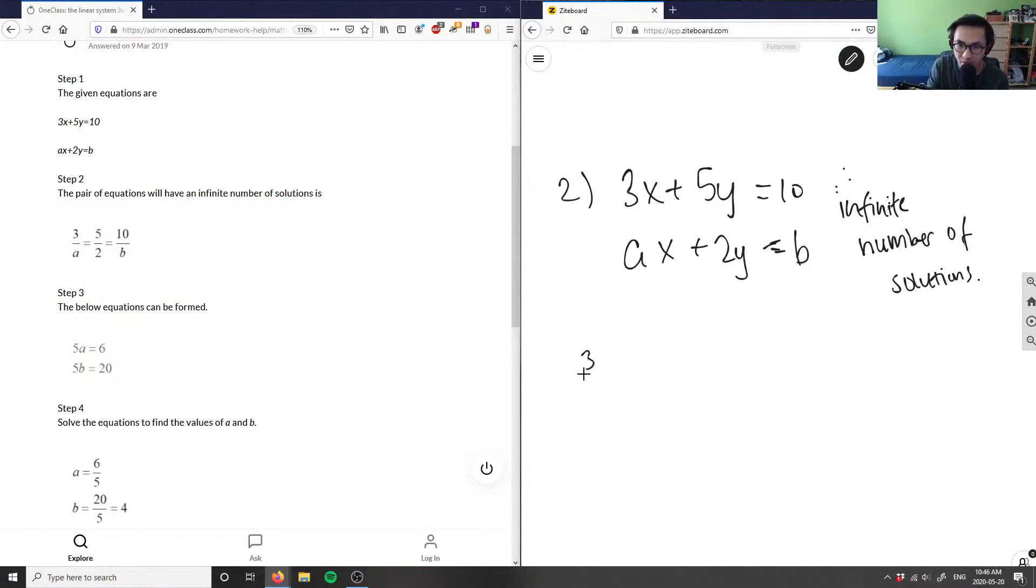So you get 3 over a equals 5 over 2 because the variables cancel out, equals 10 over b. Now we can create equations from this. I'm going to use these first two parts, so I have 3 over a equals 5 over 2.